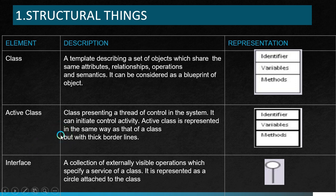Under structural things, the first element is the class. A class is a template describing a set of objects that share the same attributes, relationships, operations, and semantics. It can be considered as a blueprint of objects. A class is represented as a table with the identifier, variables, and its methods.